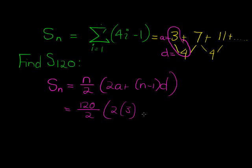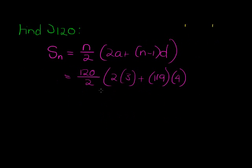Now I simply substitute: n is 120 divided by 2, 2 times 3 is 6 plus 120 minus 1 gives me 119, d is 4.